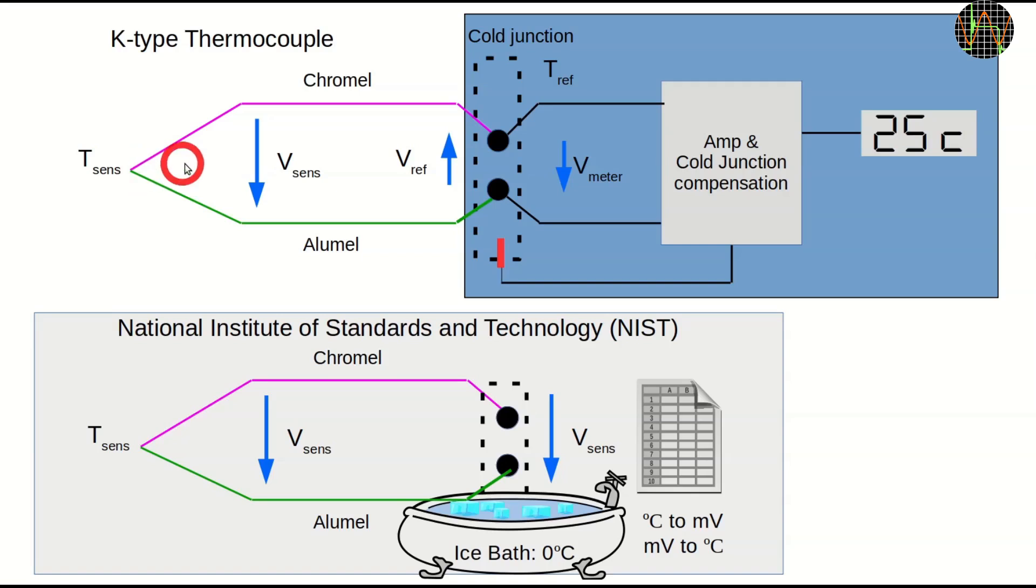The problem is that when you connect the other end of the thermocouple to your meter, you create inevitably another set of metal to metal junction which produces their own tiny voltage depending on their temperature. The standard millivolt to degrees temperature conversion as maintained by NIST assumes that this second junction is kept at 0 degrees Celsius, like an ice bath. Hence it is called cold junction.